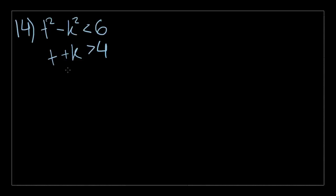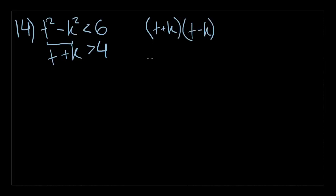Problem 14 gives two inequalities and says: if t and k are positive integers in the inequalities above, and t is greater than k, what is the value of t? This is one of those problems where you won't follow what your tutor usually teaches. Normally you'd expand the equation — t squared minus k squared equals t plus k times t minus k — because t times t is t squared, minus tk plus tk is zero, and k times negative k is negative k squared. We know tk is greater than four.